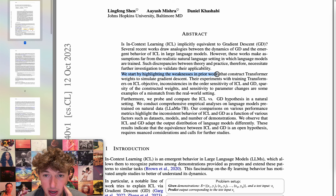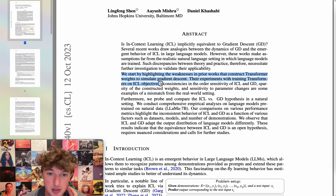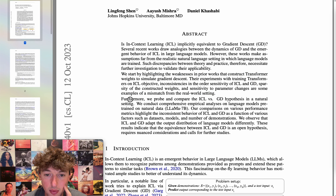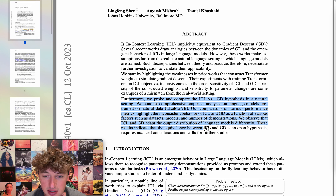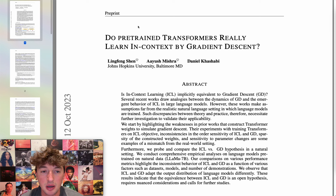They highlight weaknesses in prior works that construct transformable weights to simulate gradient descent, with experiments on transformers trained on an ICL objective. Inconsistencies in the order sensitivity of ICL and GD, sparsity of constructed weights, and sensitivity to parameter changes are examples of mismatch from the real-world setting. Their empirical analyses on language models pre-trained on natural data show that ICL and GD adapt the output distribution differently. These results indicate that the equivalence between ICL and GD is an open hypothesis requiring nuanced considerations.